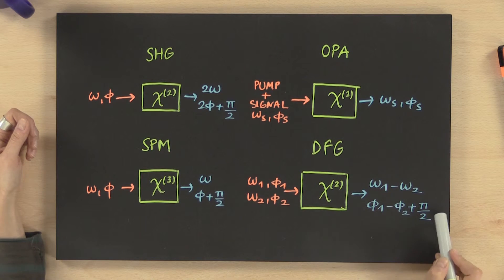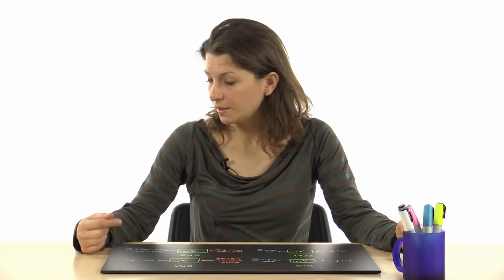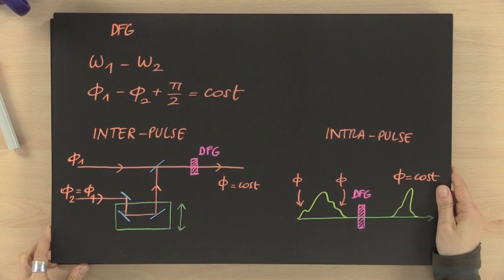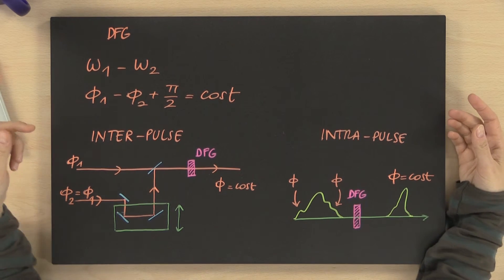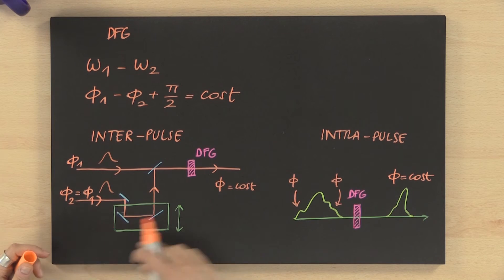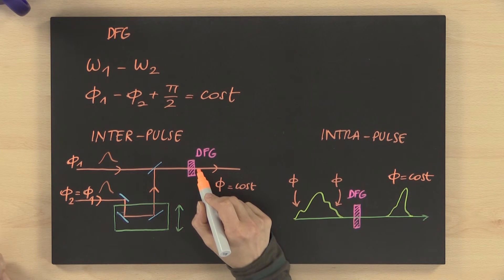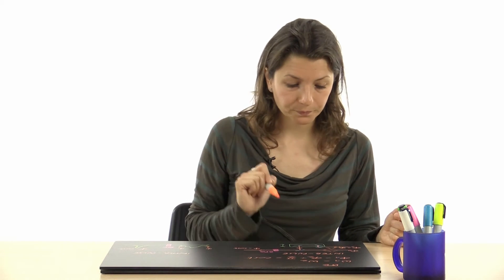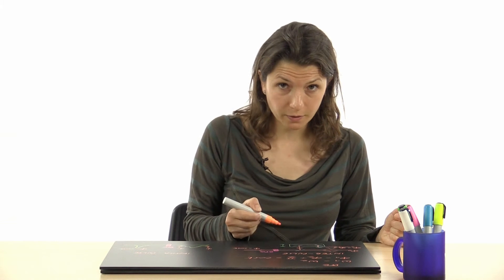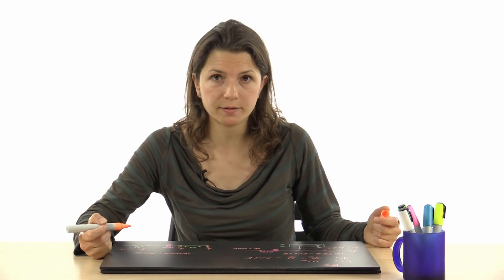For exploiting difference frequency generation for passive carrier envelope phase stabilization, we can use two approaches. We need two pulses sharing the same CEP. This can be done with the inter-pulse approach, where we obtain the two pulses from the same source — that is, two replicas of the same pulse with a delay line for synchronizing them — and send both to a non-linear crystal, obtaining a pulse with constant carrier envelope phase. With this approach, we suffer from jitter caused by the delay line, since the two pulses must be synchronized in the crystal.